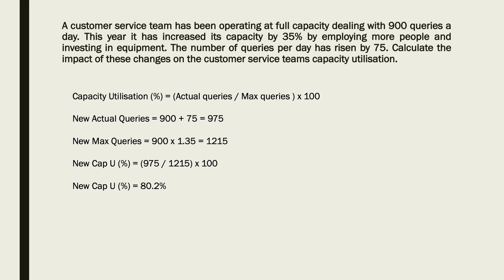And if we just whip those numbers in, the new CAPU is 975 divided by 1,215 times by 100. And that gives us a percentage which is 80.2%. But the question says calculate the impact of these changes. So the impact is — because it says in the first line they were operating at full capacity, which is obviously 100% capacity utilisation — the impact is a fall of 19.8%. I hope that helps. I'll see you in the next session.